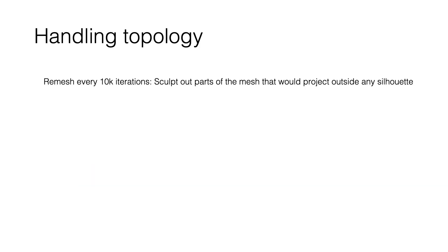However, gradient descent updates to the mesh vertices will not change the mesh topology. To handle variable topology, we remesh every 10,000 iterations by sculpting out parts of the mesh that project outside any silhouette using the running camera pose estimates.